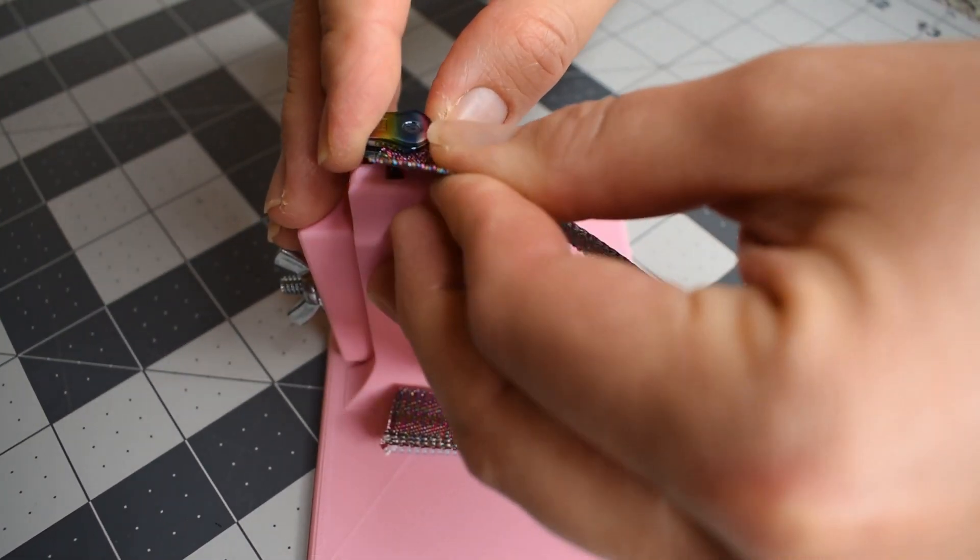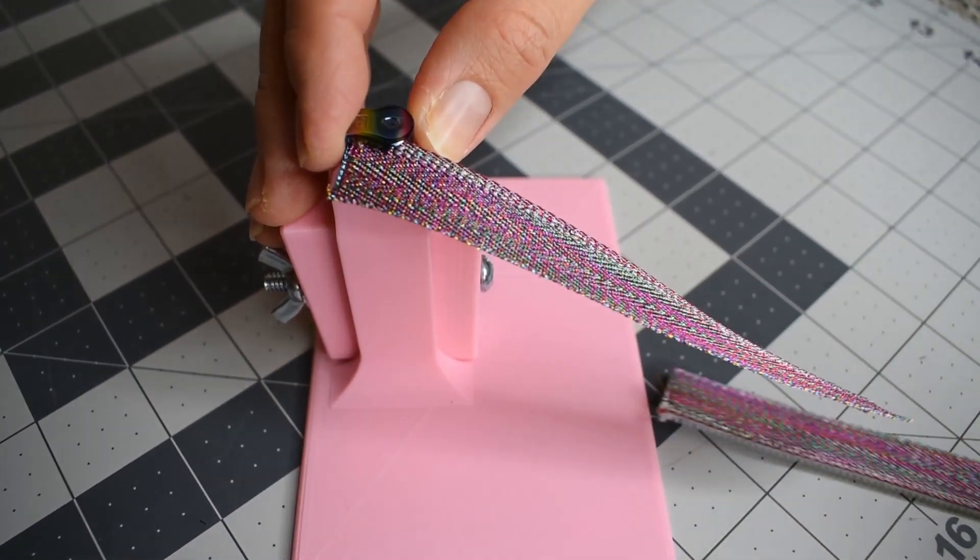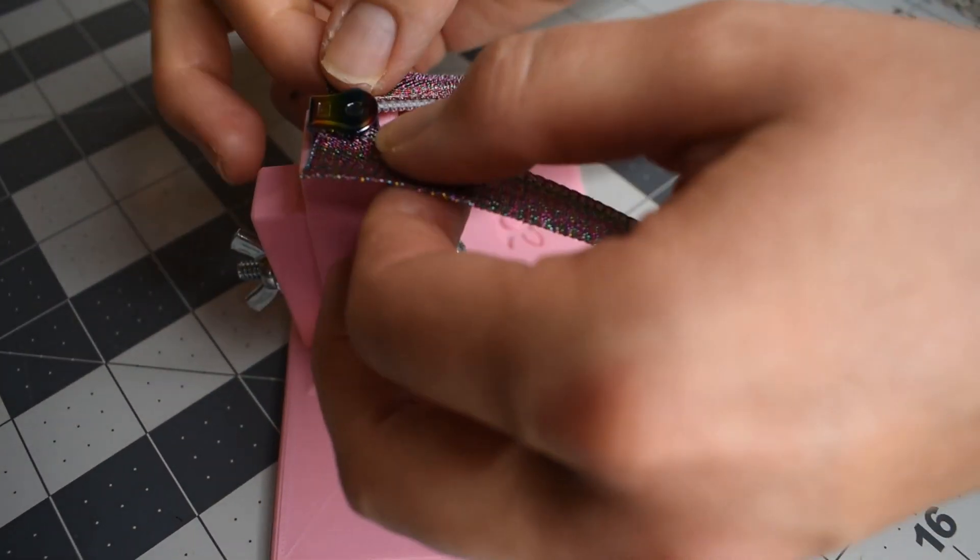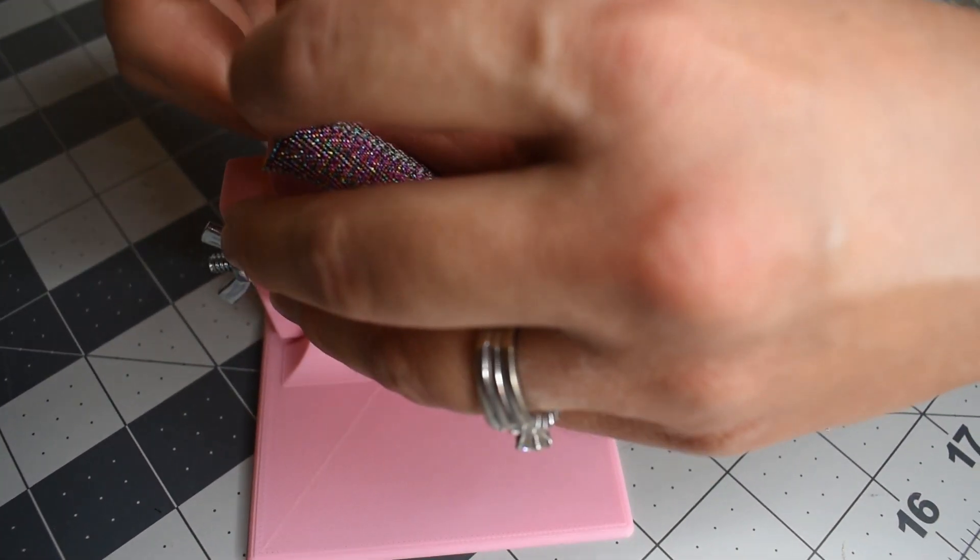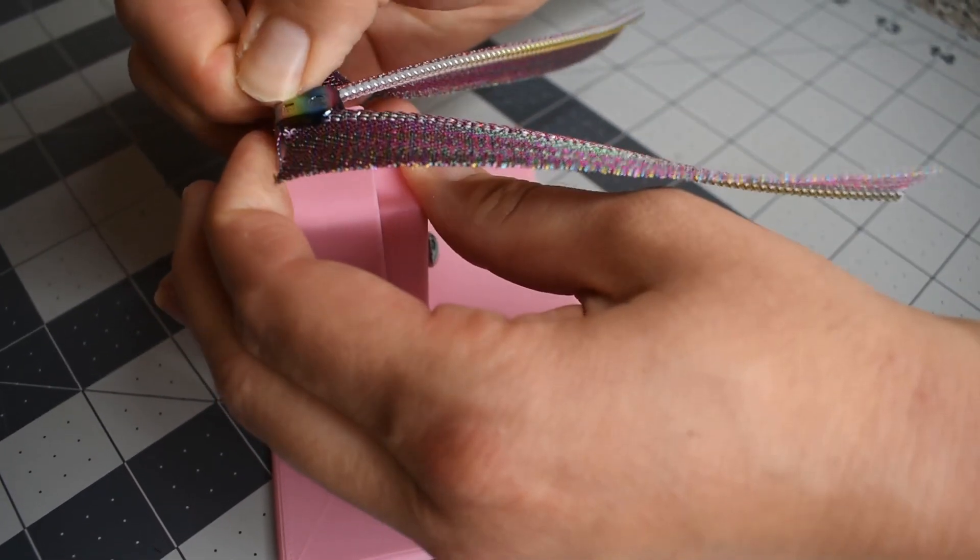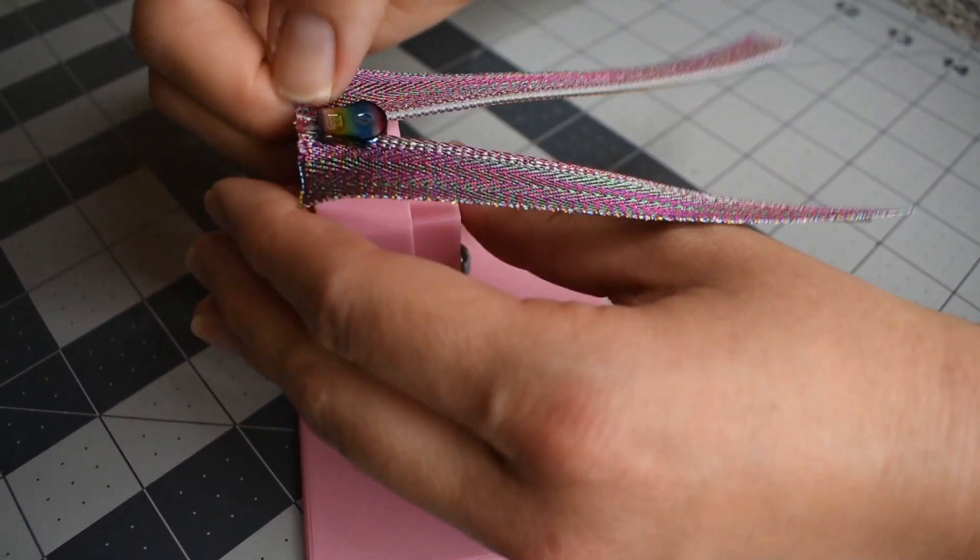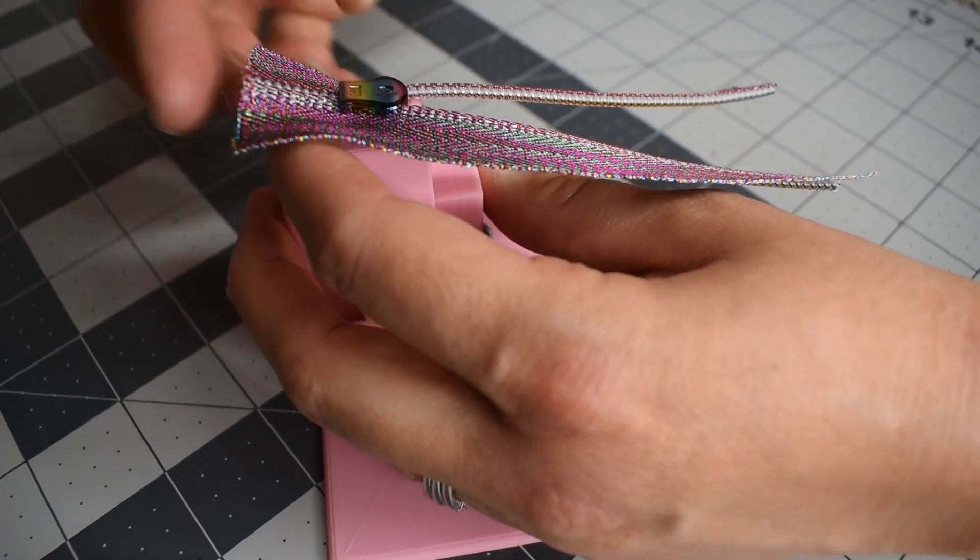You simply start to slide in your zipper tape on either side, making sure that it's even so that you don't have any waste, and you just pull it through. There you have it. If you notice, the edge is nice and even.